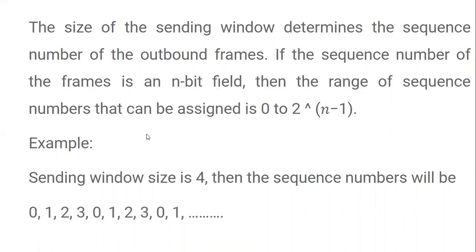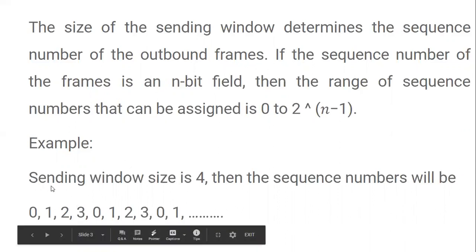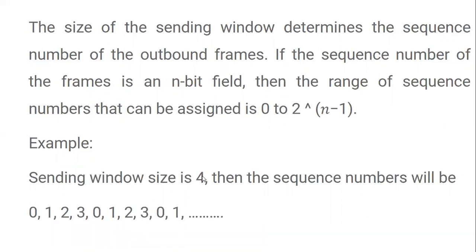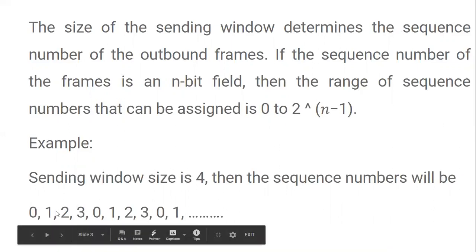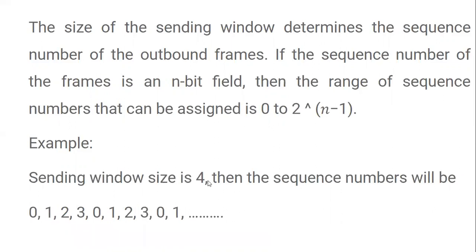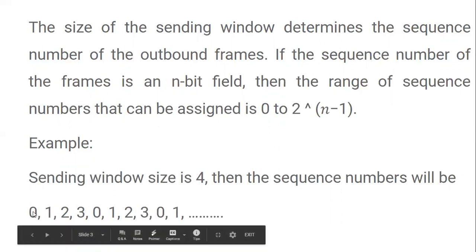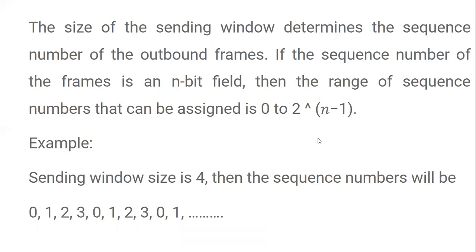For example, if the window size or frame size is 4, then the sequence numbers are 0, 1, 2, 3 — starting from 0 by default. These sequence numbers keep repeating: 0, 1, 2, 3, 0, 1, 2, 3, and so on.